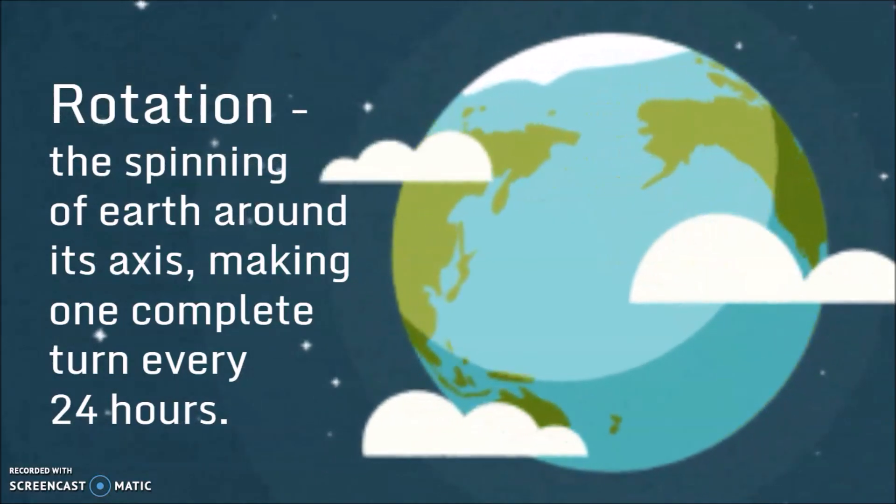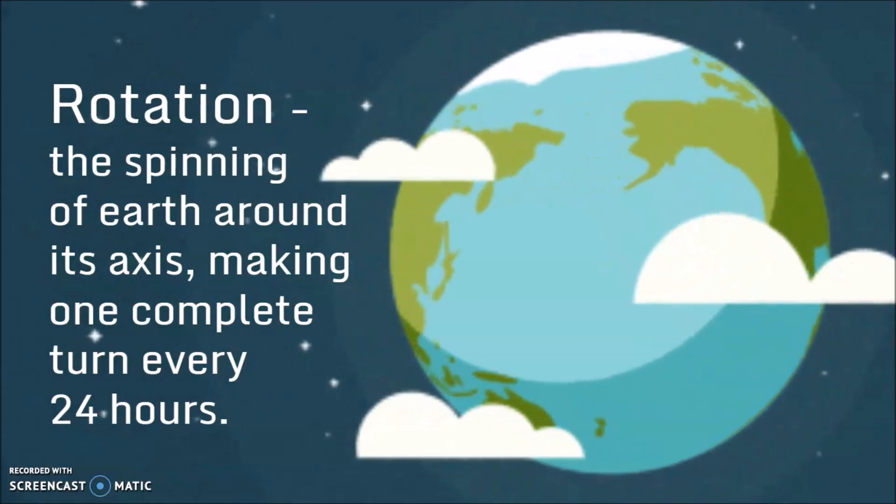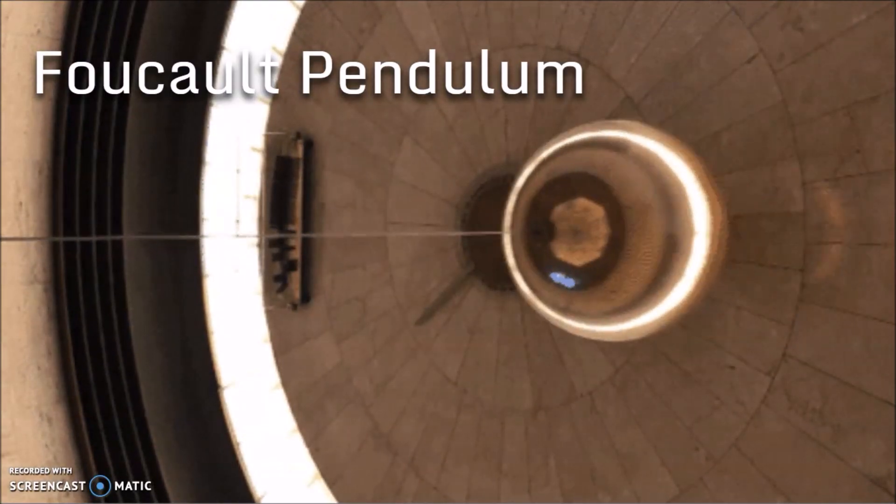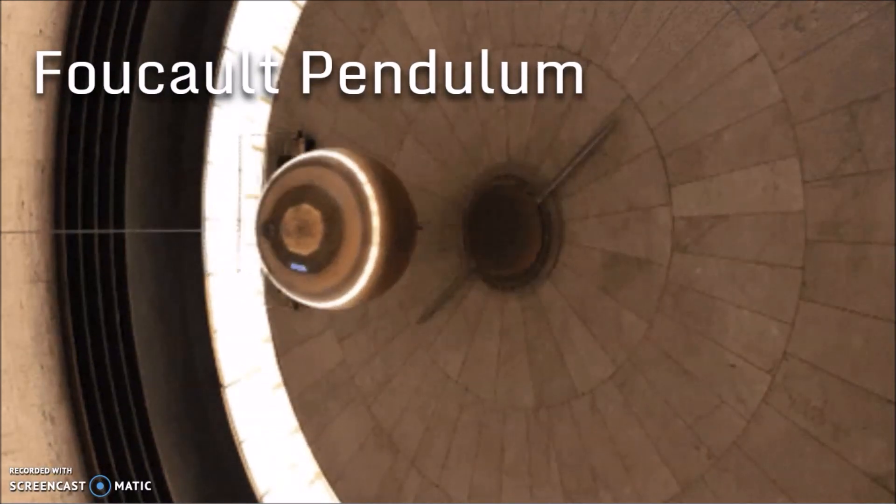Rotation means the spinning of Earth around its axis, making one complete turn every 24 hours. Now to us this may seem obvious, but this wasn't always the case, and people had to prove it and show some evidence for it.